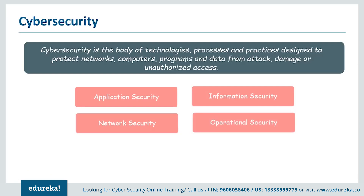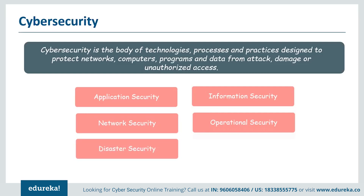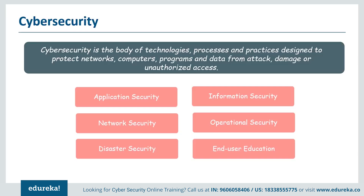There is operational security, which includes all the processes for handling and protecting data assets — the permissions users have when accessing a network and the procedures that determine how and where data must be stored and shared. Then there is disaster recovery and business continuity, which define how an organization responds to a cyber security incident or any event that causes loss of operations and data. And finally, the most important thing: end user education. It addresses the most unpredictable cyber security factor — people. Teaching users to delete suspicious email attachments, not plug in unidentified USB drives, and various other important lessons is very vital for the security of any organization.